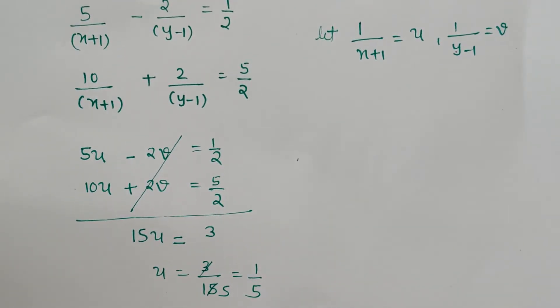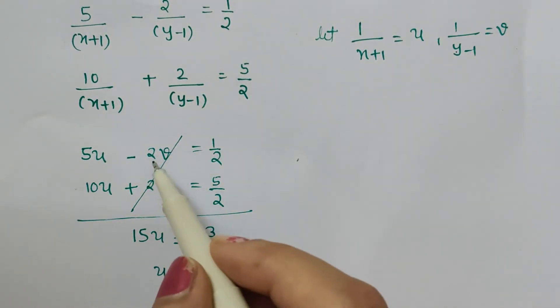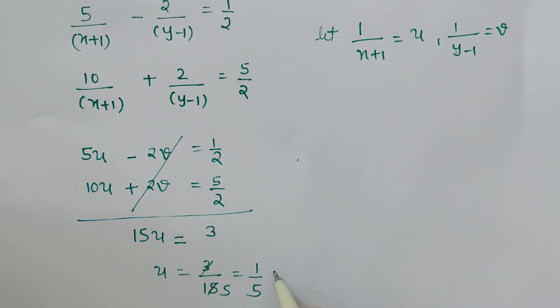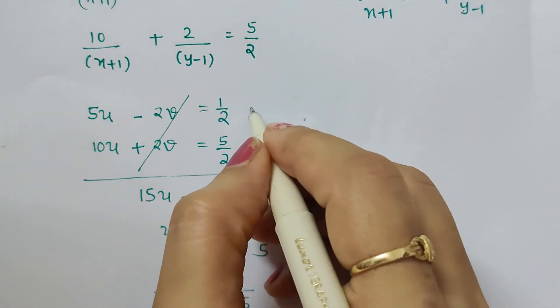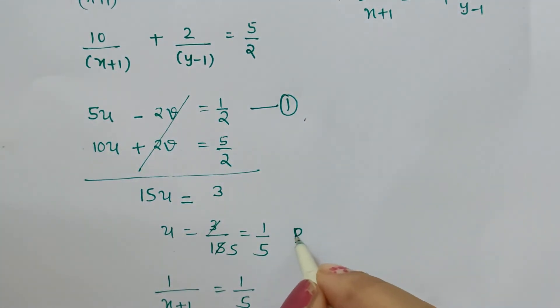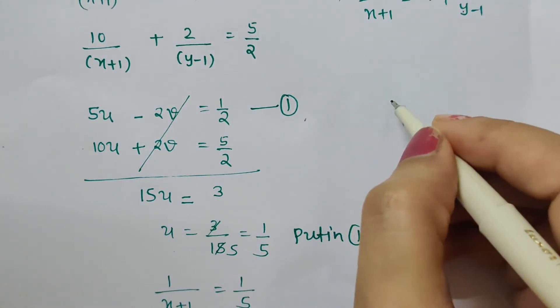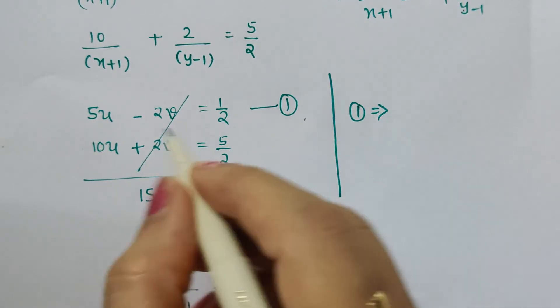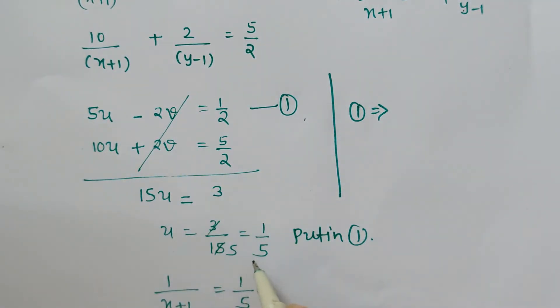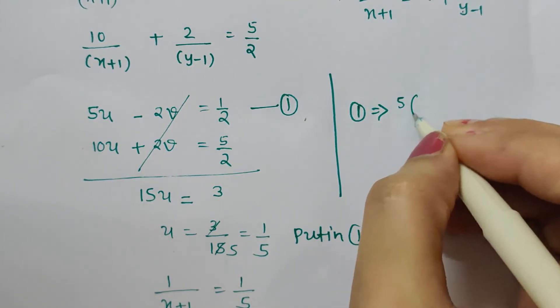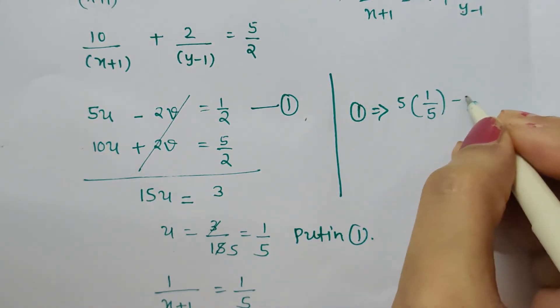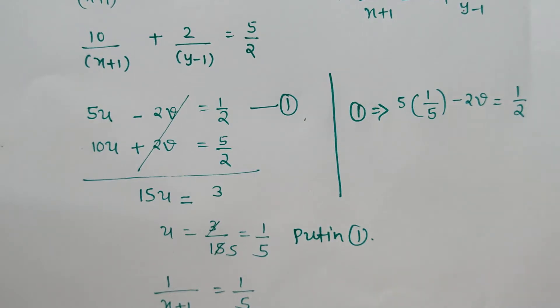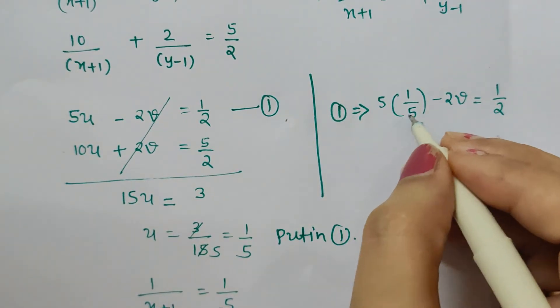Now let's find the value of y. For this, let's substitute the value of u in any of the equations. The value of u obtained was 1/5. So let's say this is equation 1. Putting in equation 1 the value of u, we get: equation 1 implies 5 times u, and u is 1/5, so this will be 5 × 1/5 - 2v = 1/2.